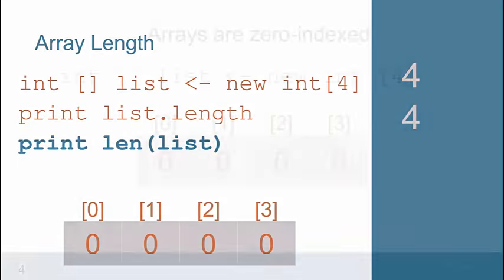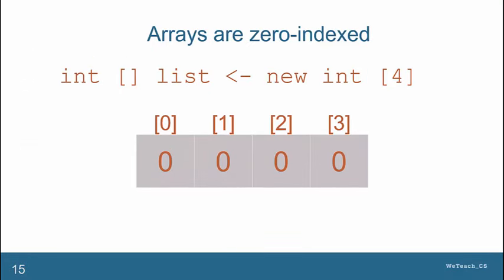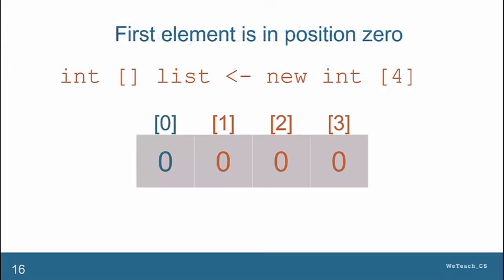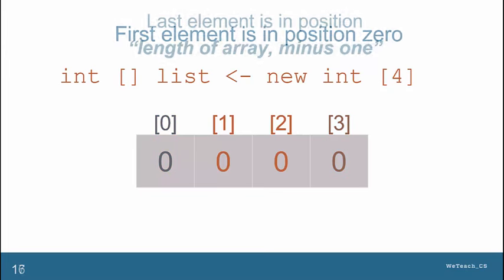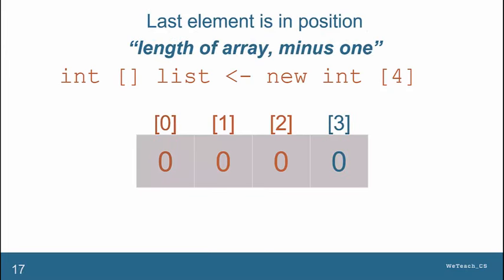Arrays are zero index based, which means the first element is in position zero, and the last element is in position length minus one. This is a very important aspect of arrays that you must be aware of, so that you don't run the risk of stepping out of bounds when trying to process an array.